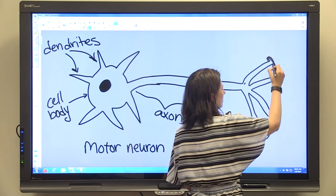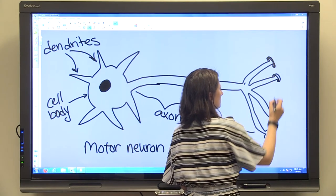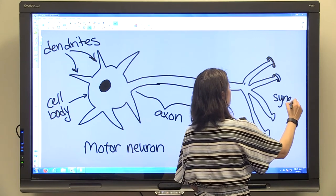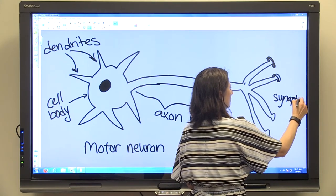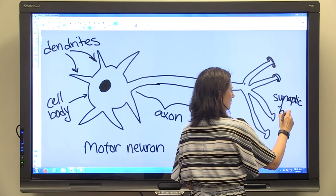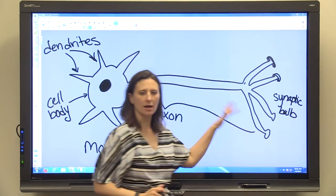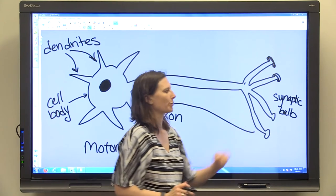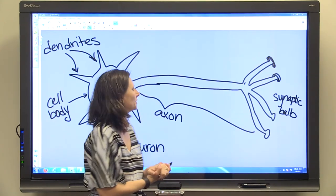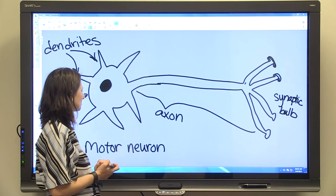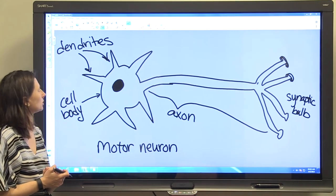At the ends of these projections are called synaptic bulbs. When you learn a little more about how neurons conduct impulses, you'll learn more about the role of the synaptic bulb, but you'll need to know that part of a motor neuron. So those are the parts of a motor neuron.